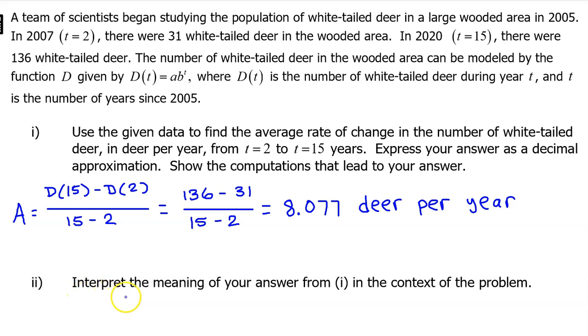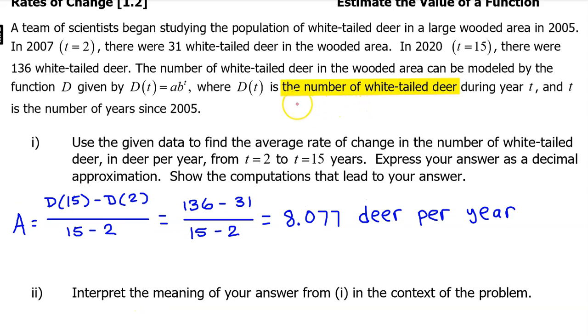Part 2. Interpret the meaning of your answer from Part 1 in the context of the problem. I'm going to show you two different ways to interpret the meaning. I think the best way to interpret is to start with the meaning of the function that you're using and then say how it's increasing or decreasing.